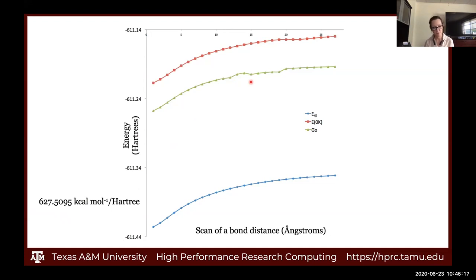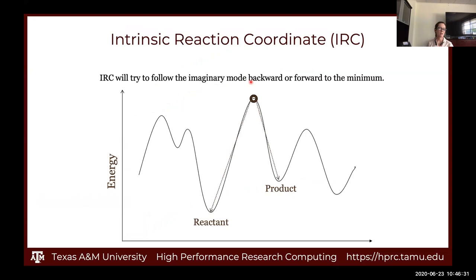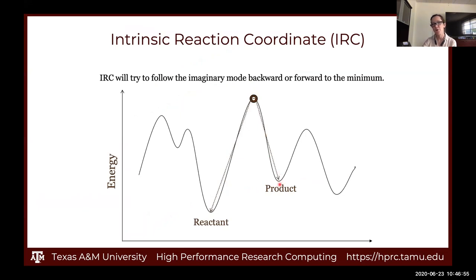If you're interested in reaction chemistry, you can calculate the reactants, the transition state, and the products. If you're not 100% sure the transition state is the one you're looking for, you can do something called an intrinsic reaction coordinate calculation — you give it information about the transition state and it follows the imaginary mode to the reactant and the product. That's an optional calculation you can do in the hands-on session.